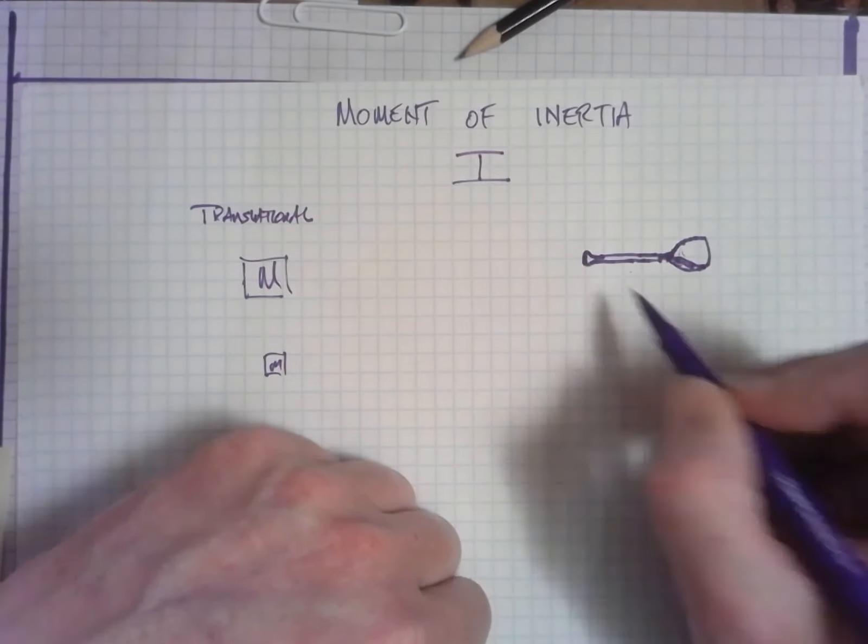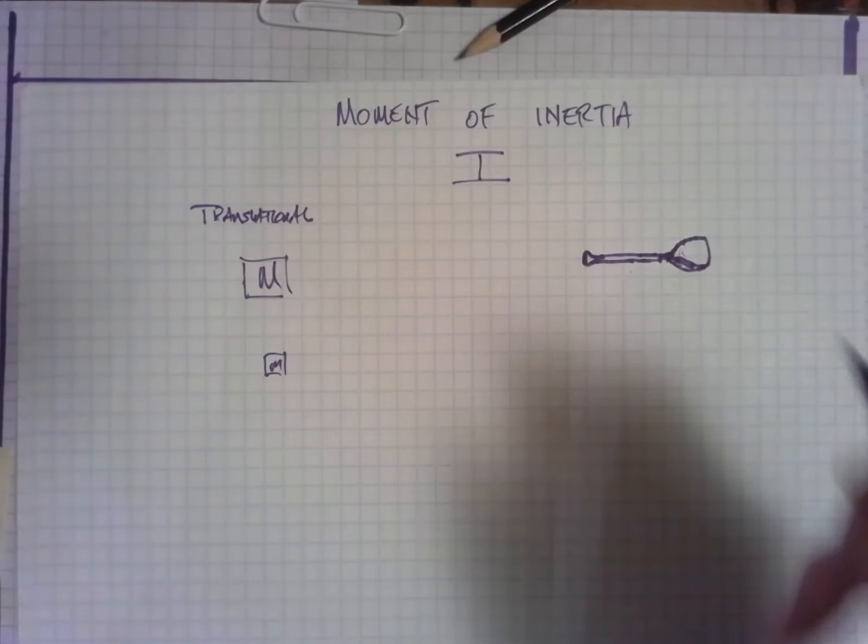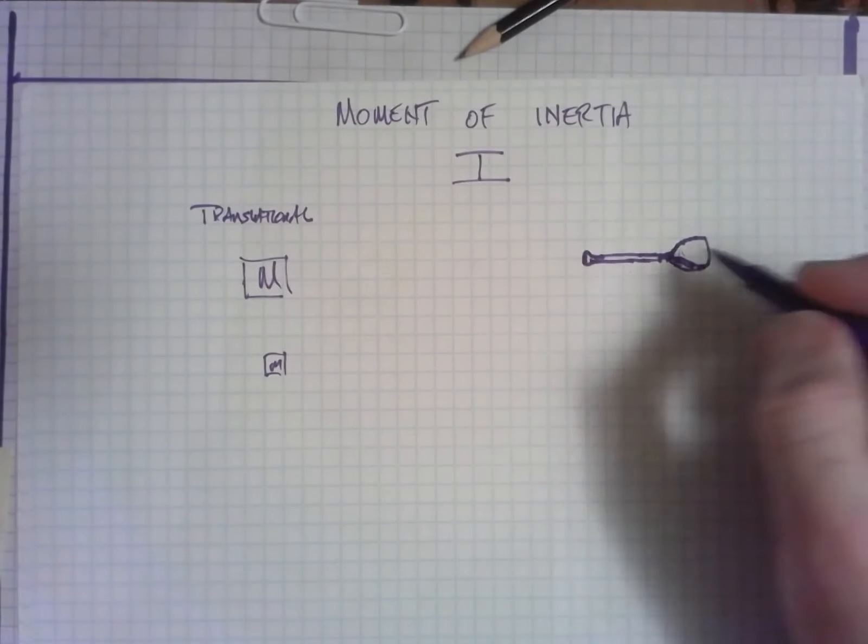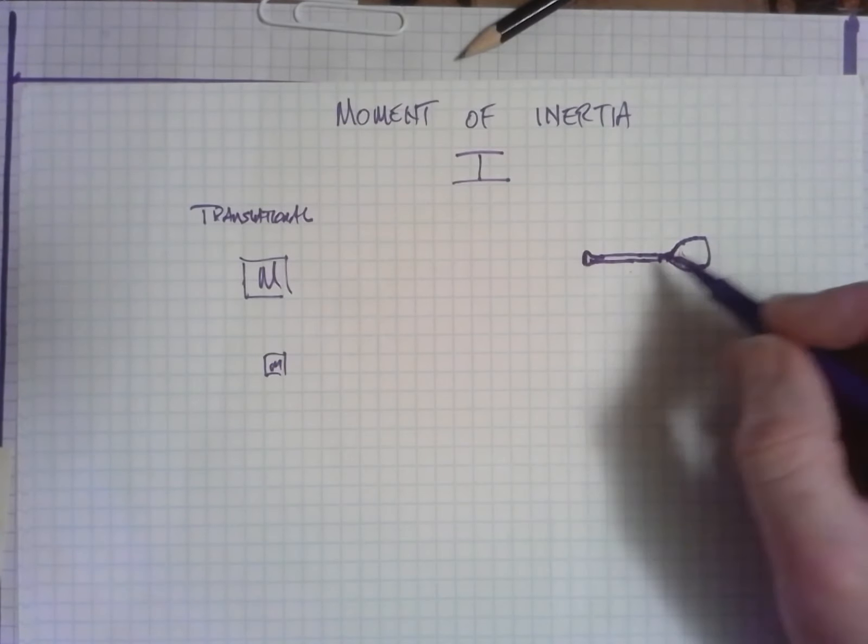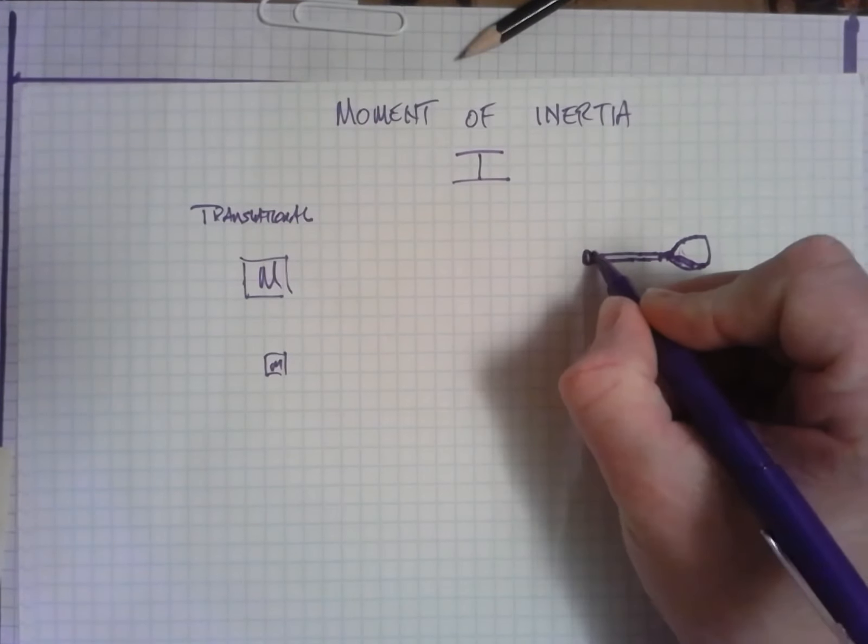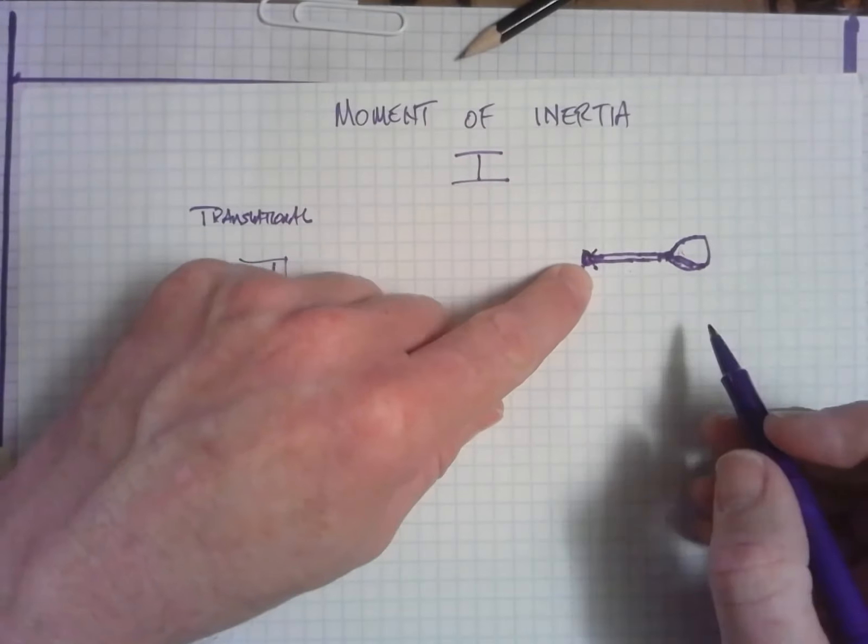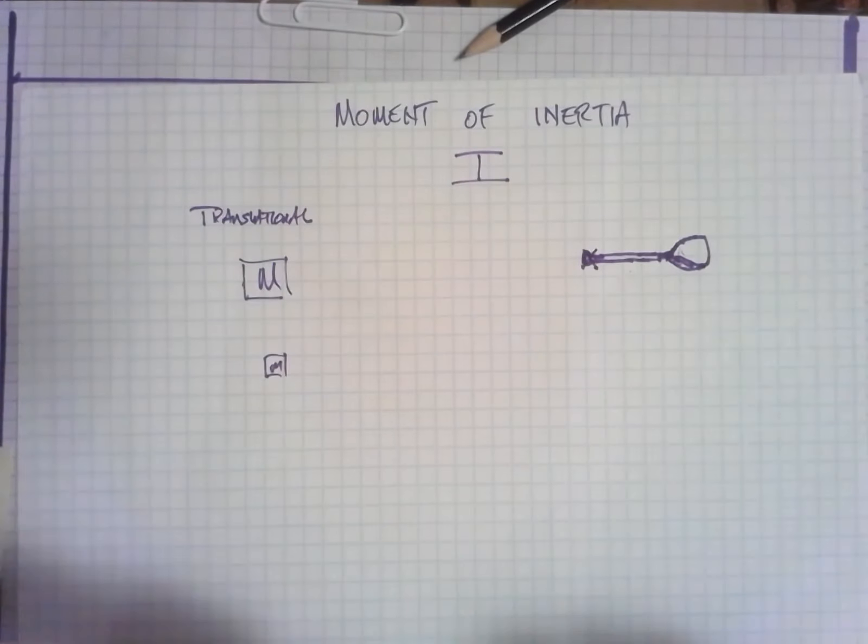Depending on where you grab this thing and try to rotate it, it can be easy or difficult to get it to spin. If you grab here and make this your axis and picture yourself with this baseball bat in your hand...